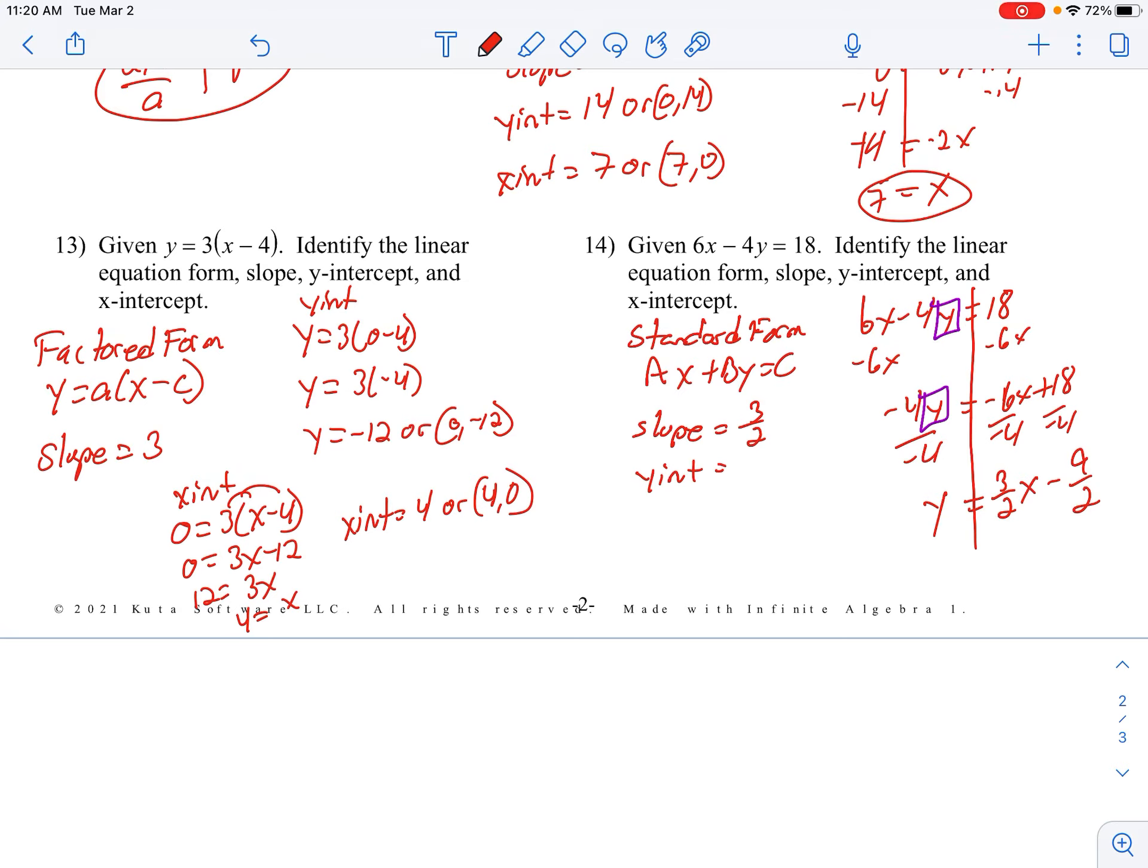And we found the Y-intercept pretty easily to be negative 9 halves, or we could write it as an ordered pair.